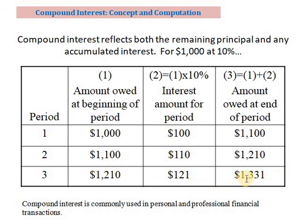If you compare the simple interest rate and the compounded interest rate, you will see that the compounded interest rate gives a higher number. Using the simple interest rate, the amount owed after three years was one thousand three hundred dollars. However, with the compounded interest rate, the amount owed is one thousand three hundred thirty-one dollars.